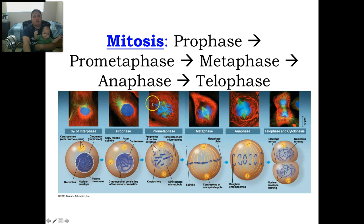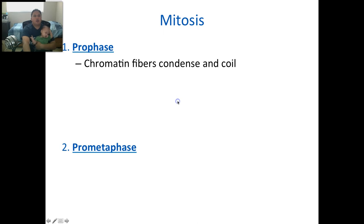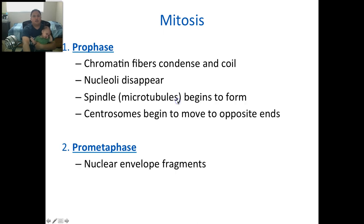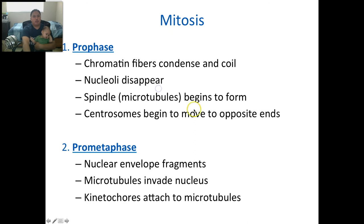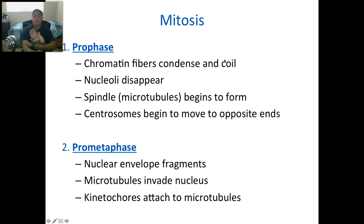The steps of mitosis: we have prophase, prometaphase, metaphase, anaphase, and telophase. Let me talk about prophase and prometaphase because it's confusing. In prophase, the chromatin — your genetic material, which is kind of fluid — condenses and coils to become those X shapes. The nucleoli disappear, the spindle forms, and the centrosomes, which are the anchors on the sides, move to the opposite ends.